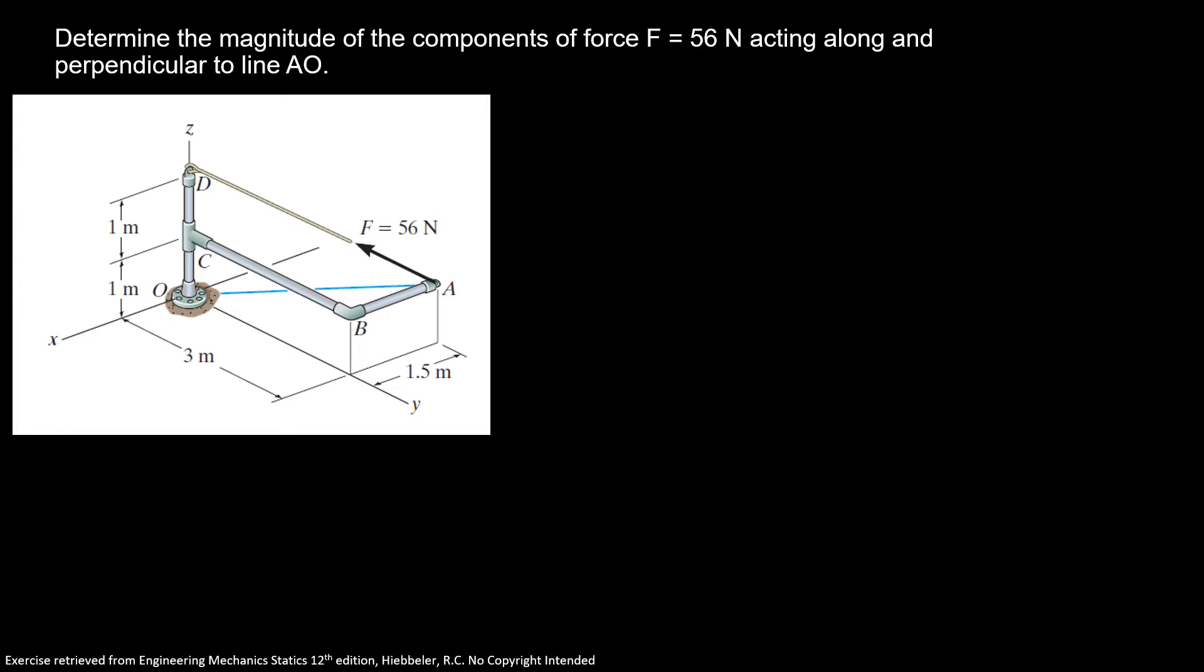Now our exercise is the last exercise I will do about vectors. The problem is determine the magnitude of the components of force F equals 56 newtons acting along and perpendicular to line AO. When a force is acting parallel, that's along or perpendicular to line AO, we're going to follow some steps.